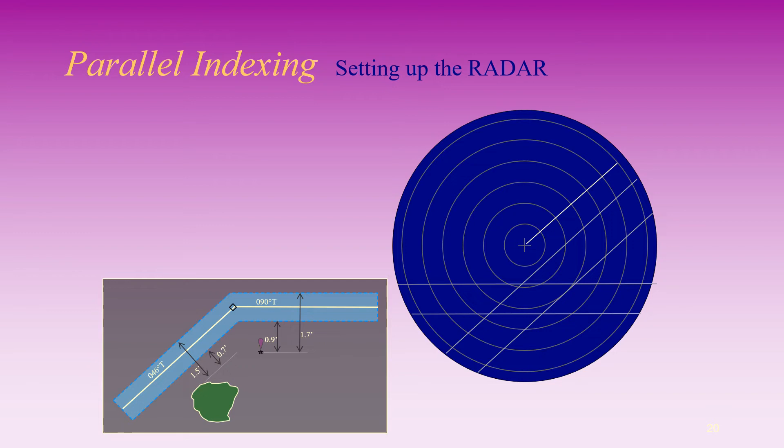On the second leg, the reference point used is the light beacon. The light beacon will be southward of the vessel, so both index lines should be drawn southward of the radar origin.